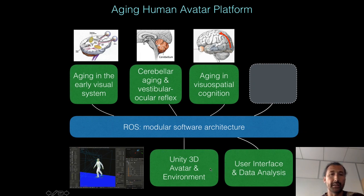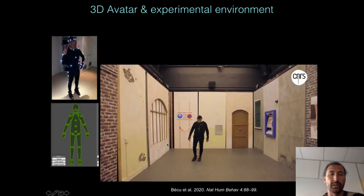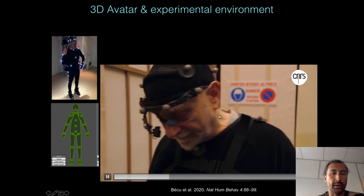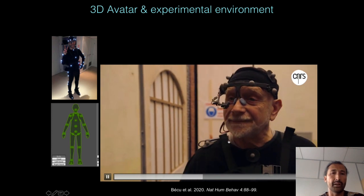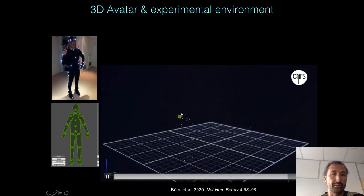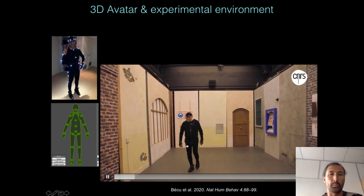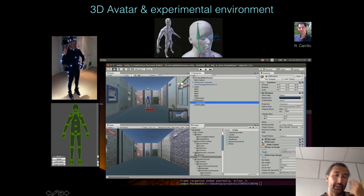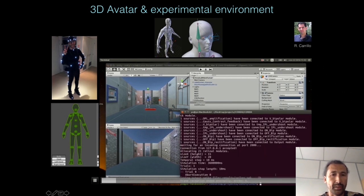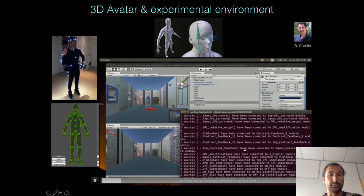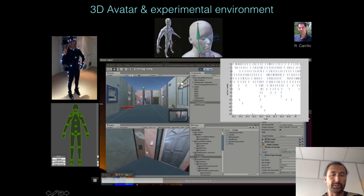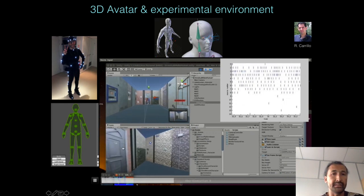Now let's see how the Unity 3D avatar environment model works. Here you see a video of an experiment conducted in our lab, where an aged person is navigating in a street lab environment. While navigating, we record body position using motion capture and gaze direction using an eye tracker, so we can later reproduce these movements on a computer. This motion tracking and eye tracking data can be loaded into the avatar platform. The avatar will then move in a realistic 3D model of the environment in which the person actually navigated, so we can see what the subject sees while navigating.